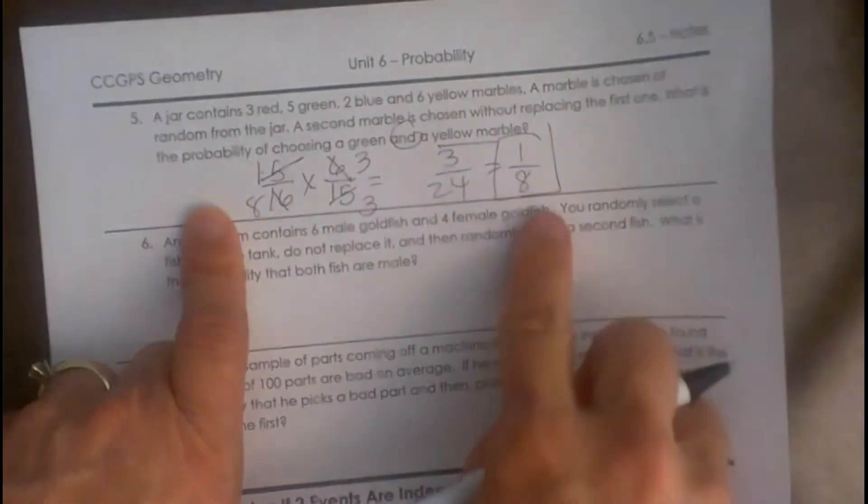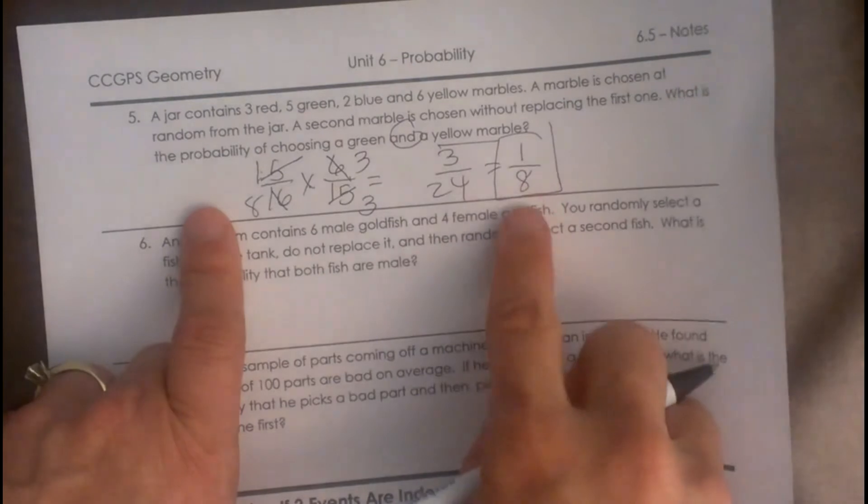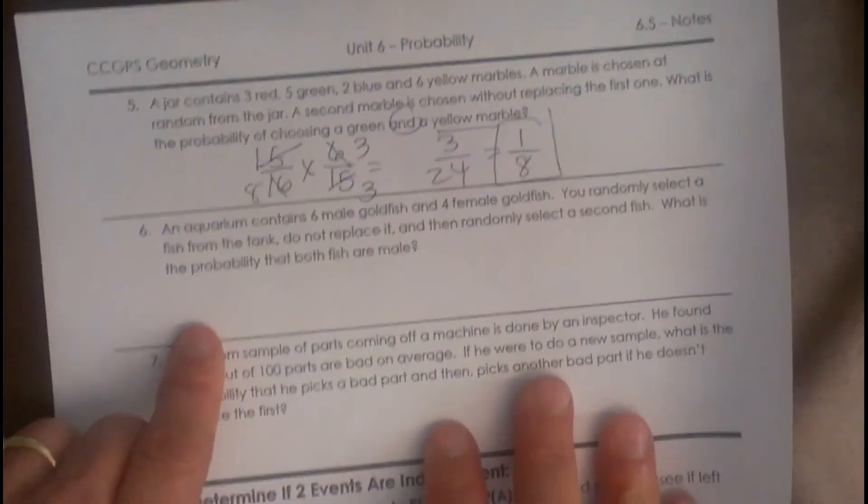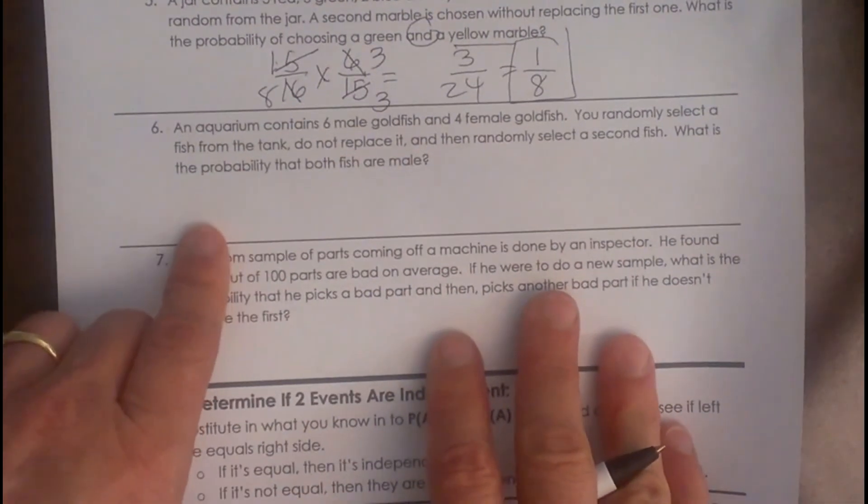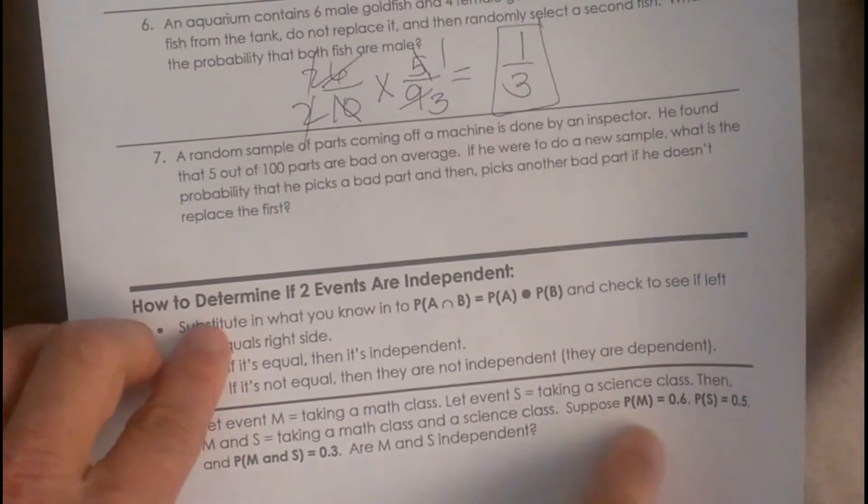So the probability of that occurring is 1 eighth of the time. So out of 8 tries, it would happen 1 time, is what the theoretical probability is saying. Next one.